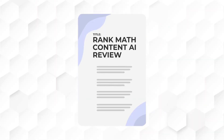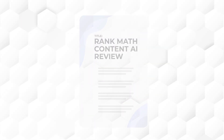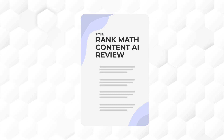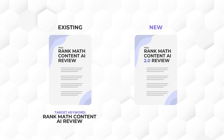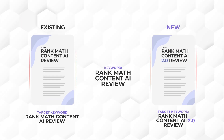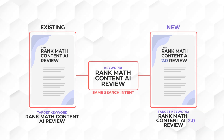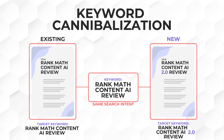Keyword cannibalization occurs when multiple pages on your website target the same keyword or similar variations. For example, you have a page targeting the keyword 'Rank Math Content AI Review,' and when Content AI upgraded to version 2, instead of working on the existing content, you started a new article targeting the same keyword but added '2.0' to it. Now you have multiple pages targeting the same keyword with the same meaning and same search intent — this is keyword cannibalization.